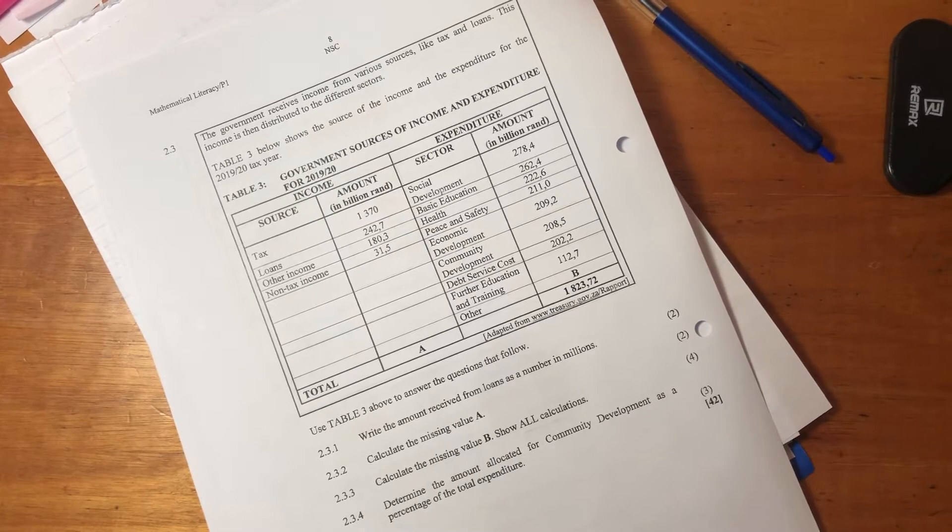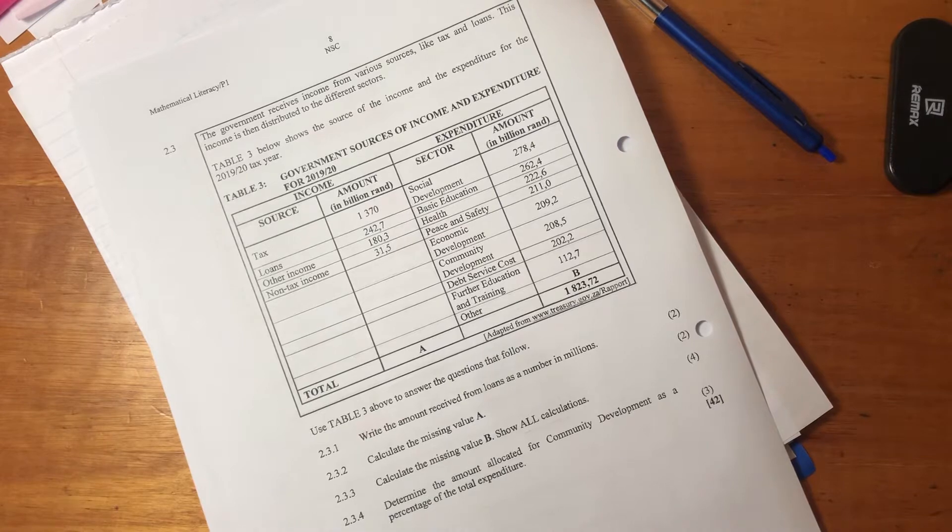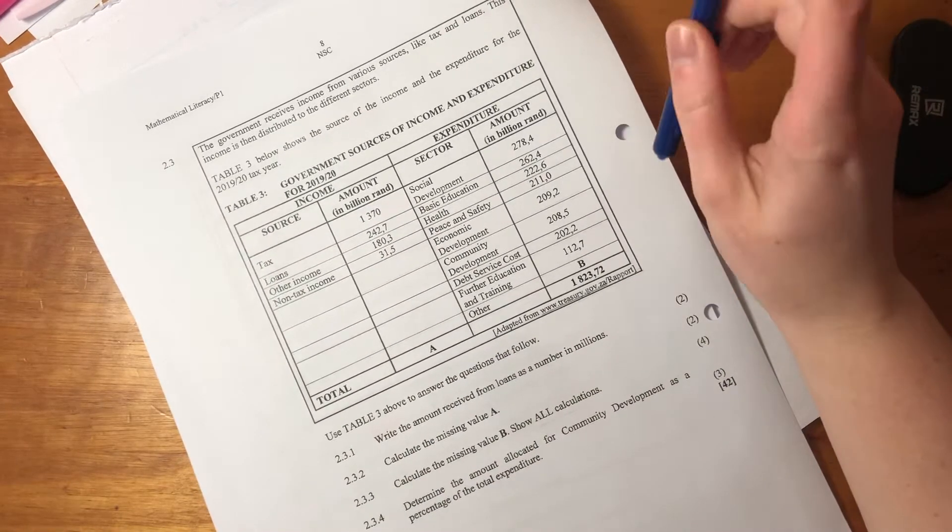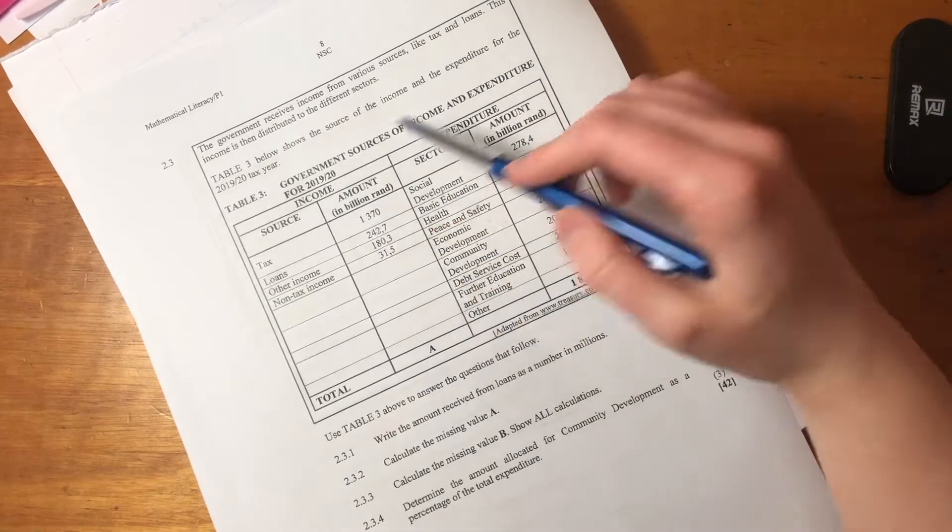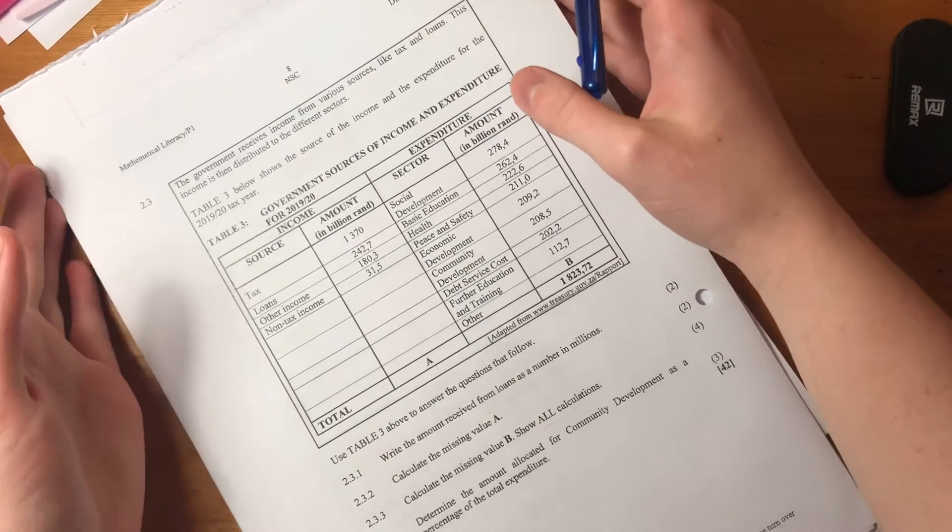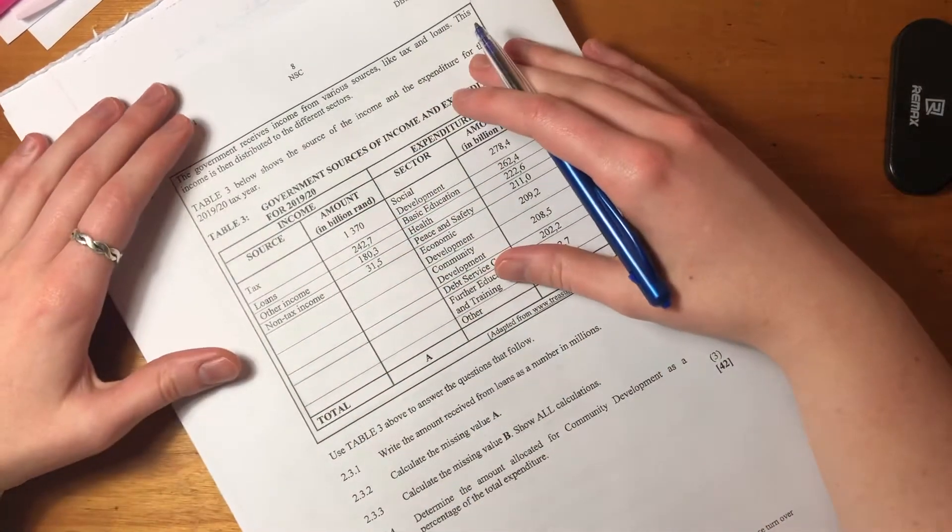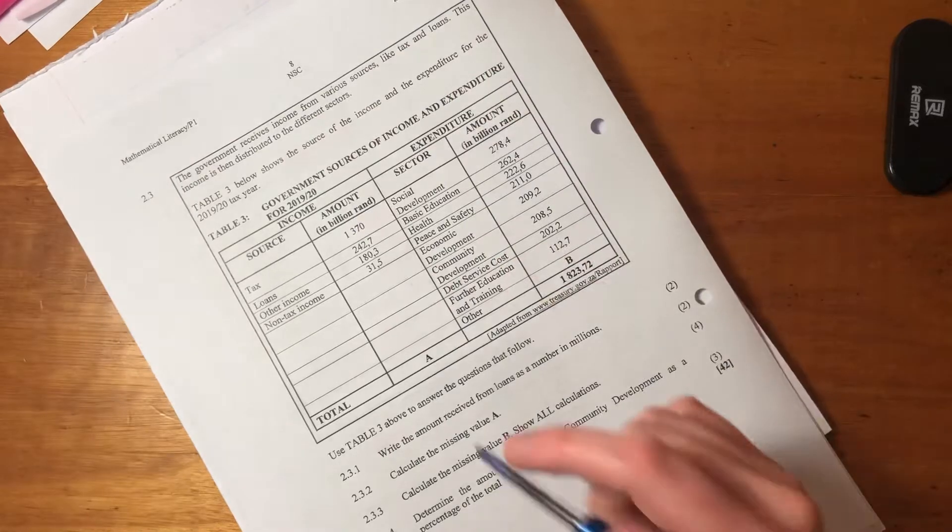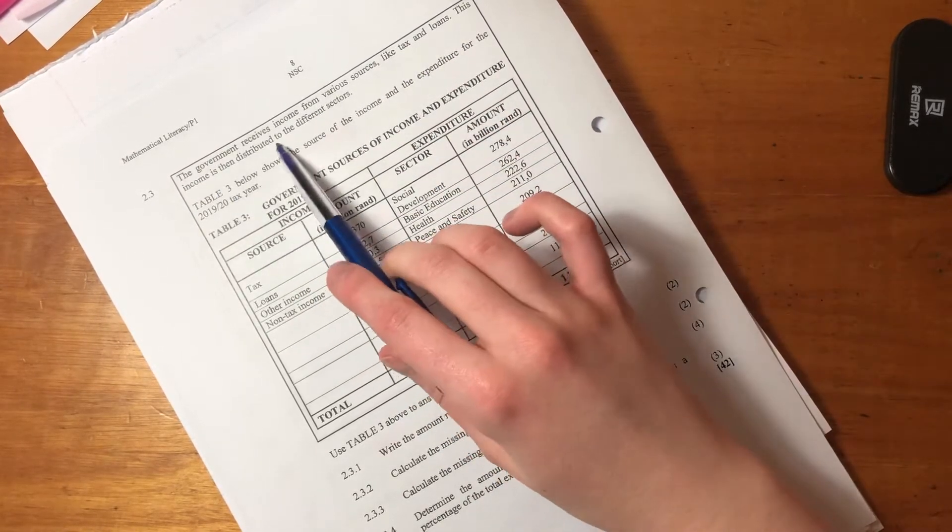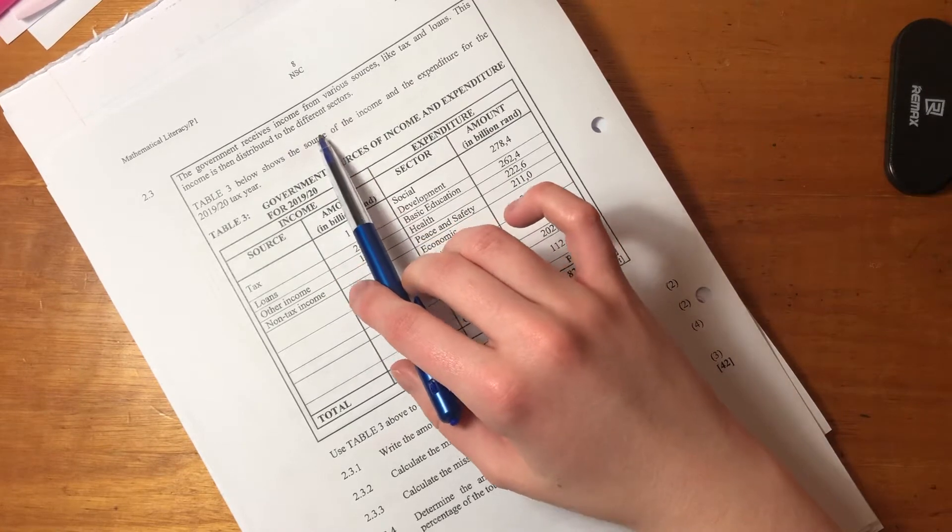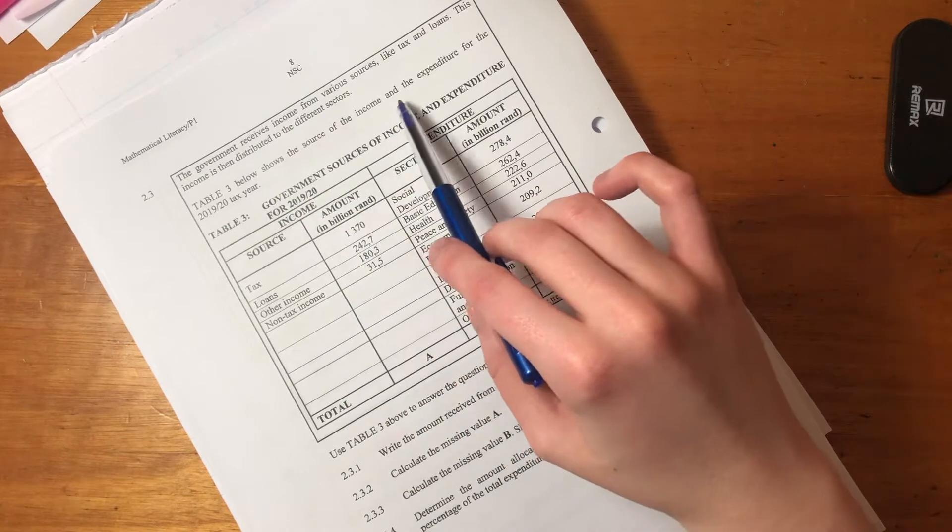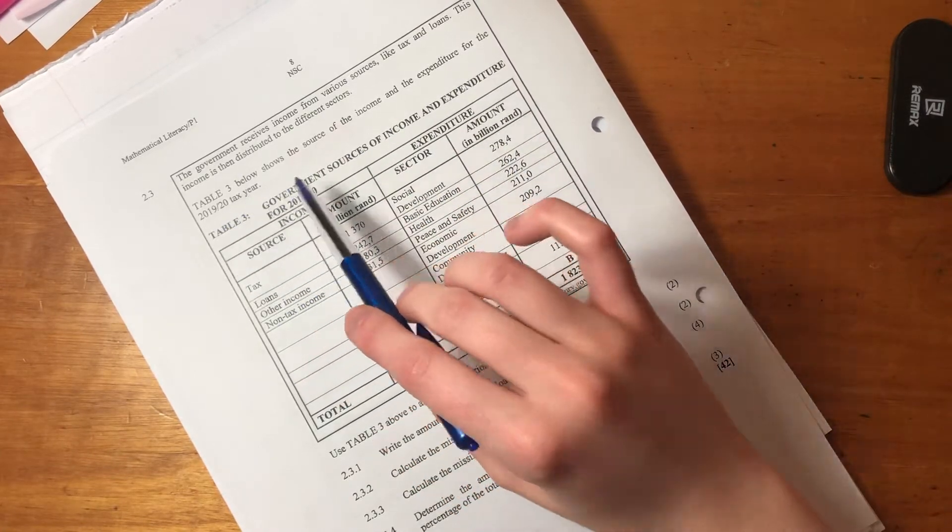Hello everyone. Let's move on to question 2.3. This one has to do with government income and expenditure. Let's read through the question and make sure we understand the context. The government receives income from various sources like tax and loans. This income is then distributed to different sectors. Below shows the source of income and expenditure for the 2019 and 2020 tax year.